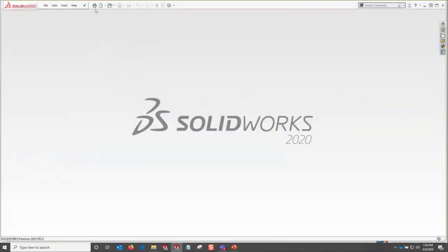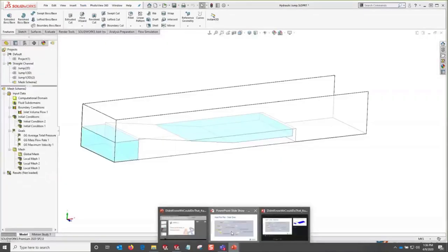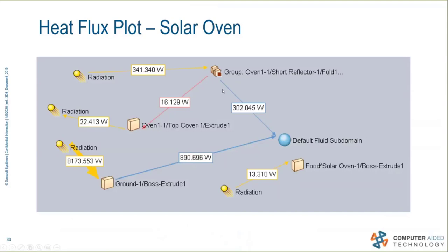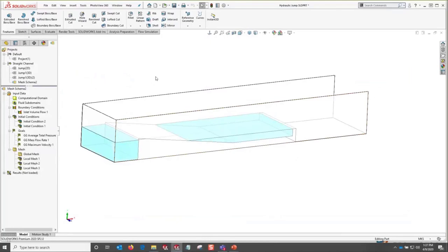Let me show you the heat flux plot. Based on the solar oven simulation, you've got radiation quantities shown in yellow and conductive and convective heat flow plots as well. The fluid subdomain is taking 302 watts directly from the solid; from the ground it's taking 890 watts. You can see where the heat is moving within the project — 13 watts going directly into the food source. That's the heat flux plot.